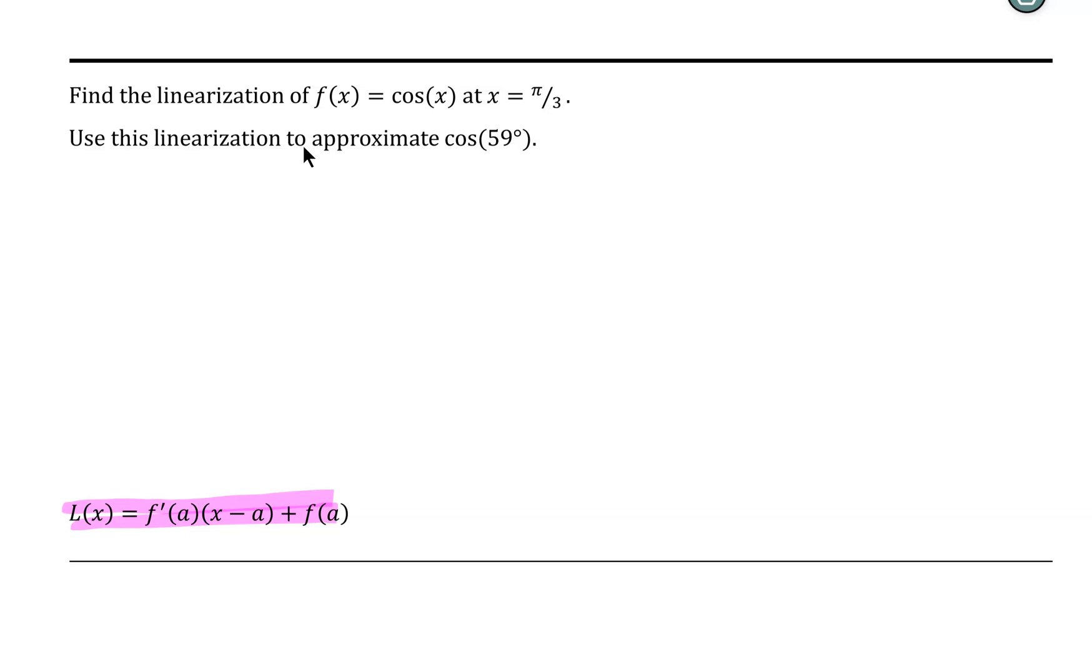We want to find the linearization for cos(x) at x = π/3. In this case, π/3 is the place or the A at which we want to anchor our linearization. So our linearization here will be L(x) = f'(π/3)(x - π/3) + f(π/3).